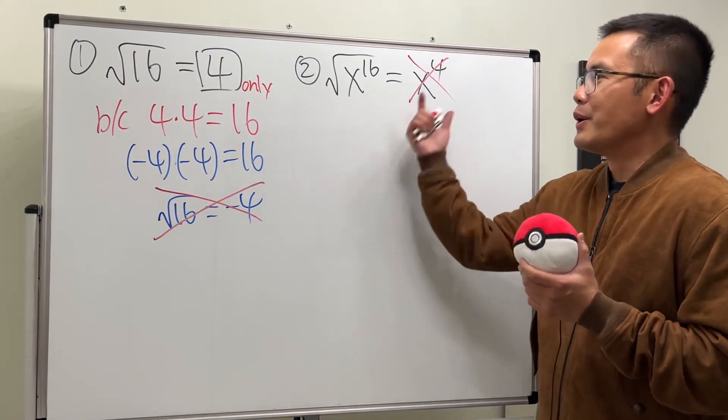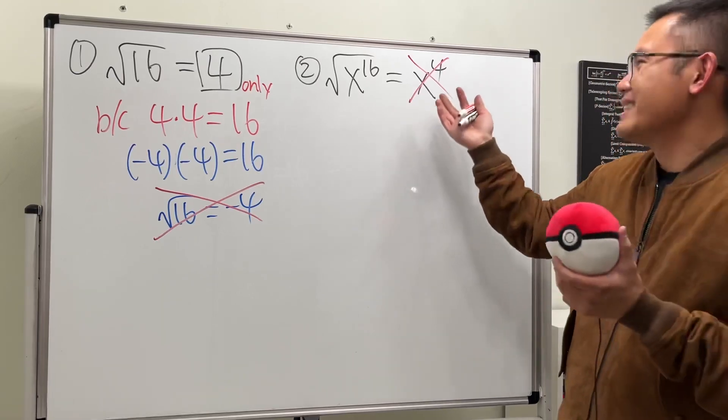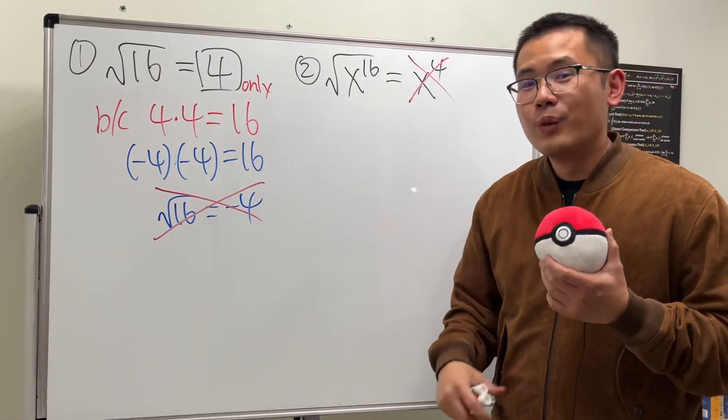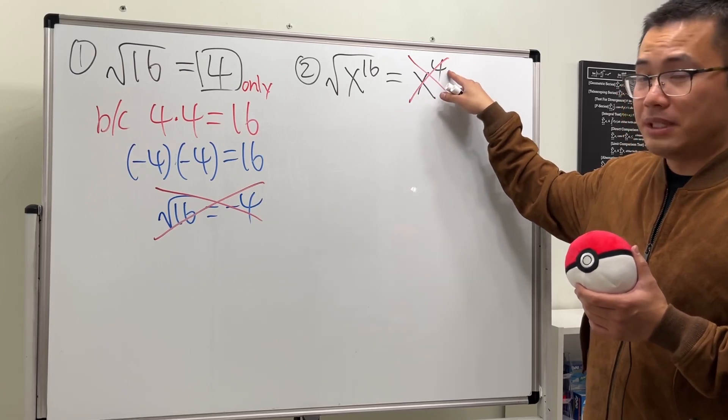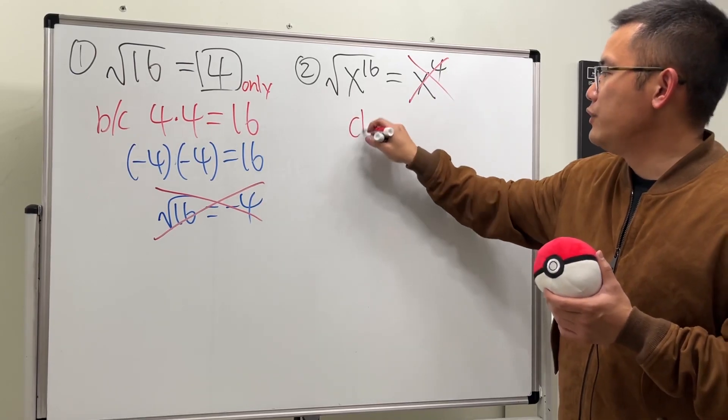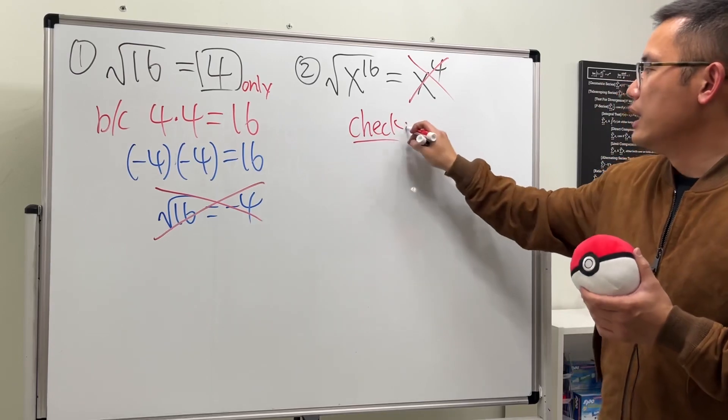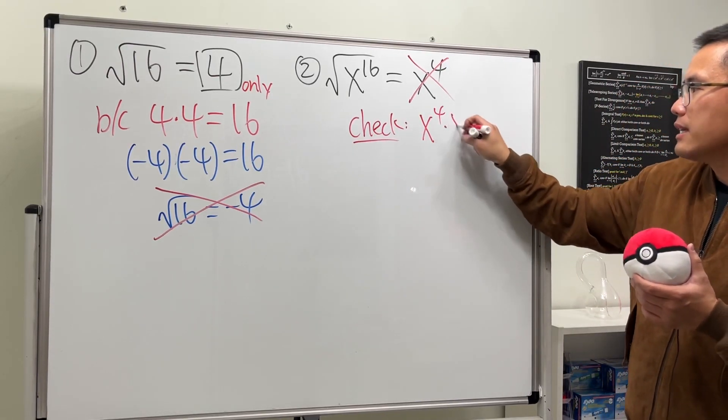Okay, so why is the answer not x to the 4 though? Well, we have to think about it. The answer is not x to the 4 because, you see, if you check it, if we do x to the fourth power times x to the fourth power...